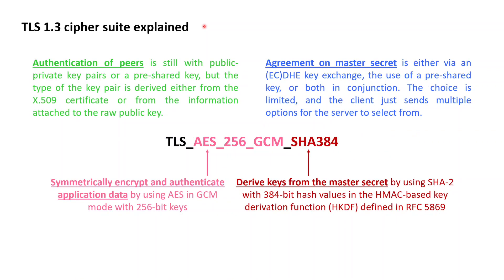To fully explain a TLS 1.3 cipher suite we need to know that within TLS 1.3 the authentication of the peers still takes place via asymmetric public-private key pairs. Where TLS 1.2 cipher suites clearly specified the type of the public-private key pair, TLS 1.3 derives this type either from the corresponding X.509 certificate received from the peers or from information attached to the raw public key.